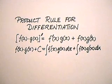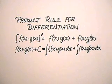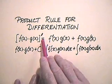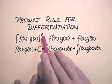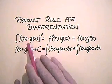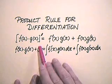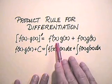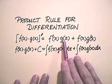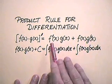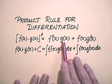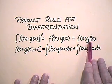Let's now look at the product rule. The product rule for differentiation can be written with prime notation as: the derivative of f(x) times g(x) is f'(x)g(x) plus f(x)g'(x).